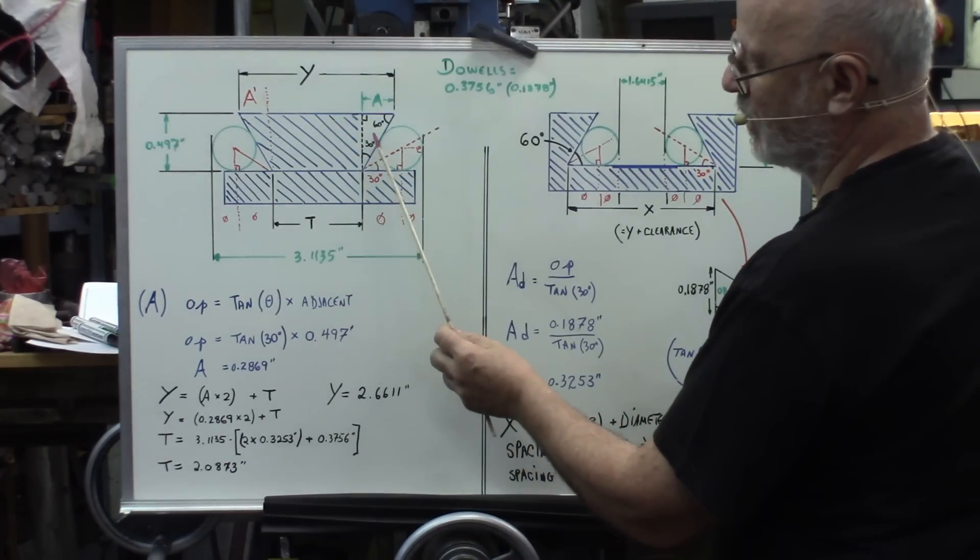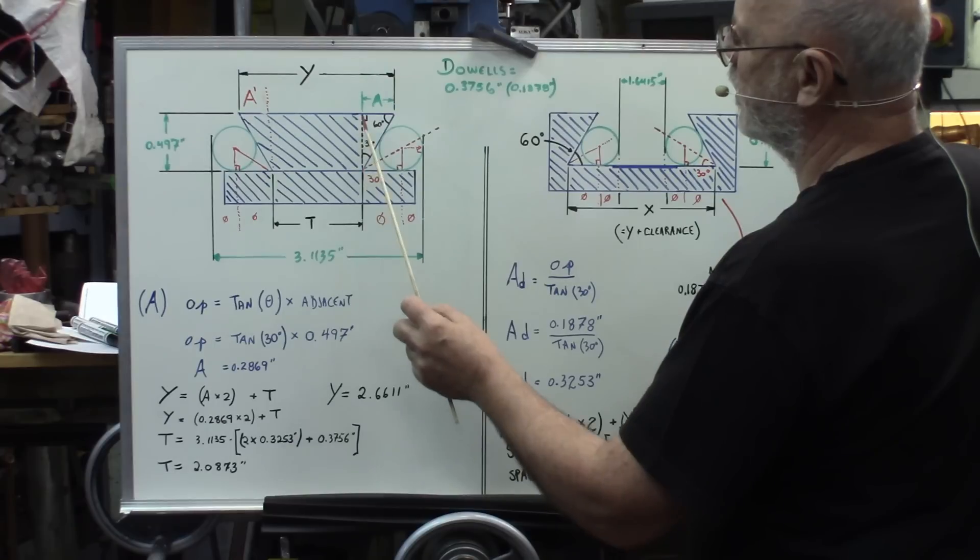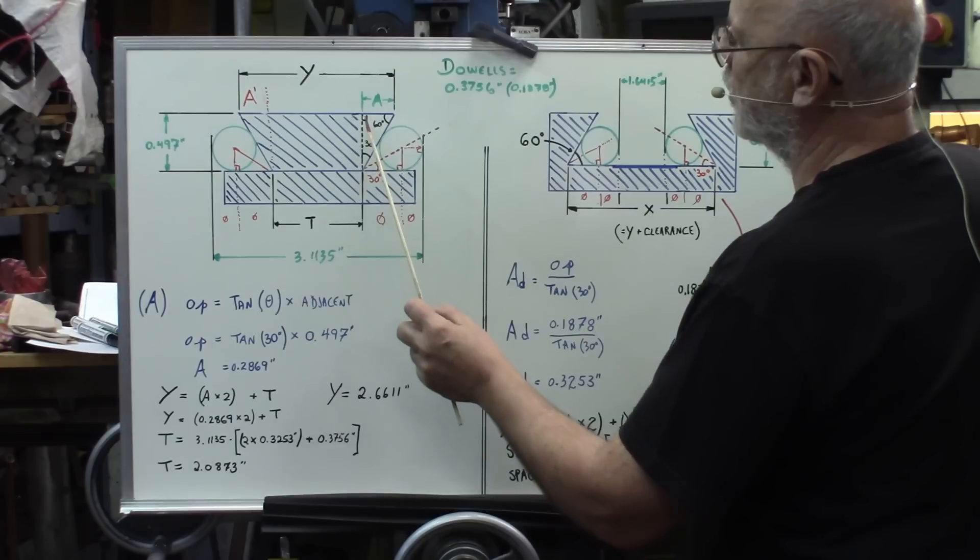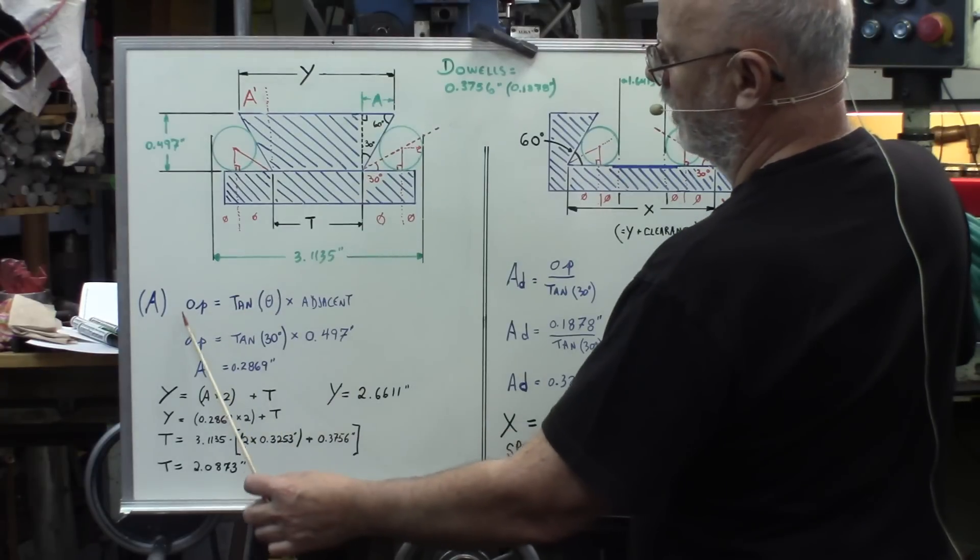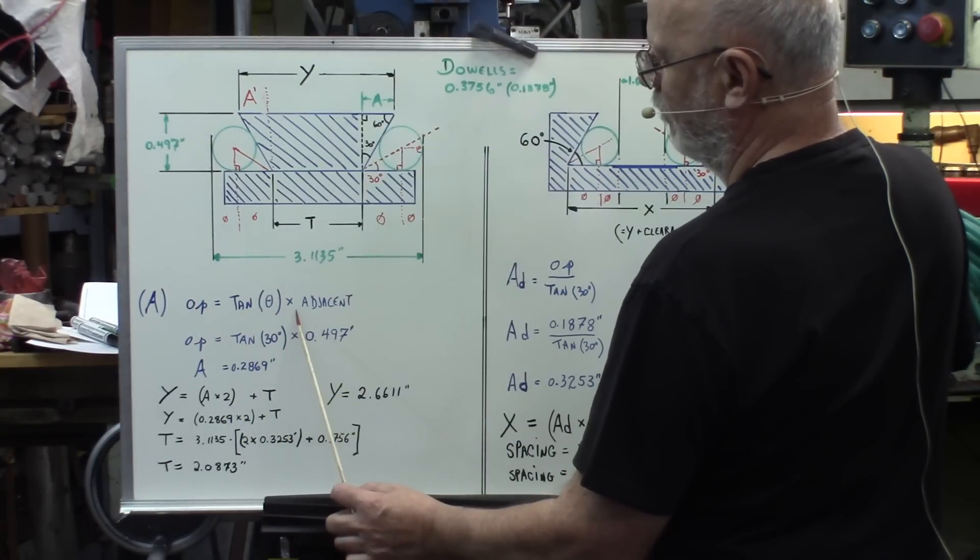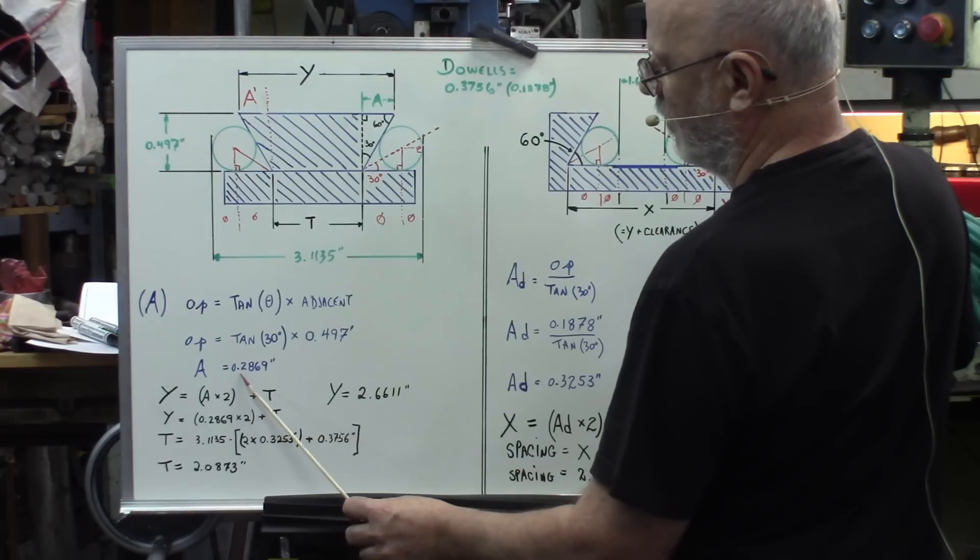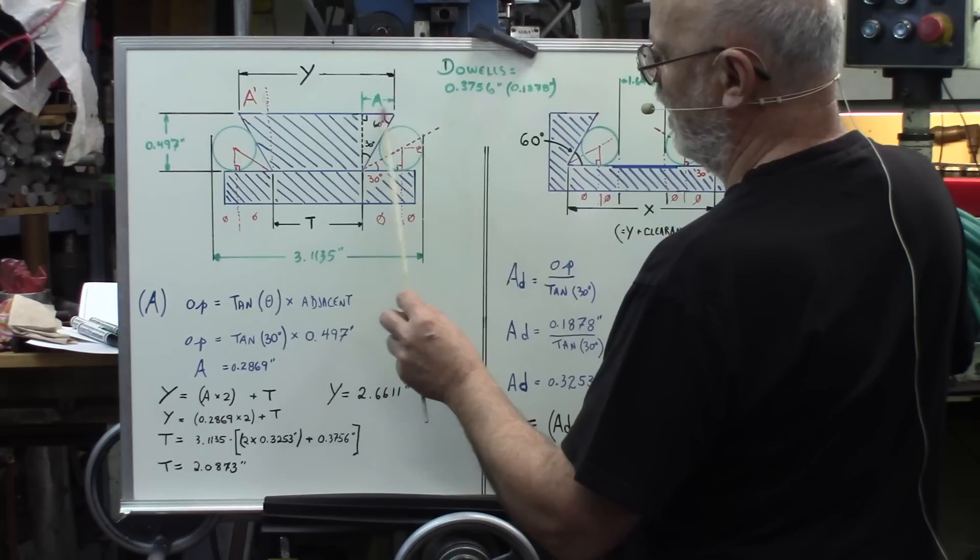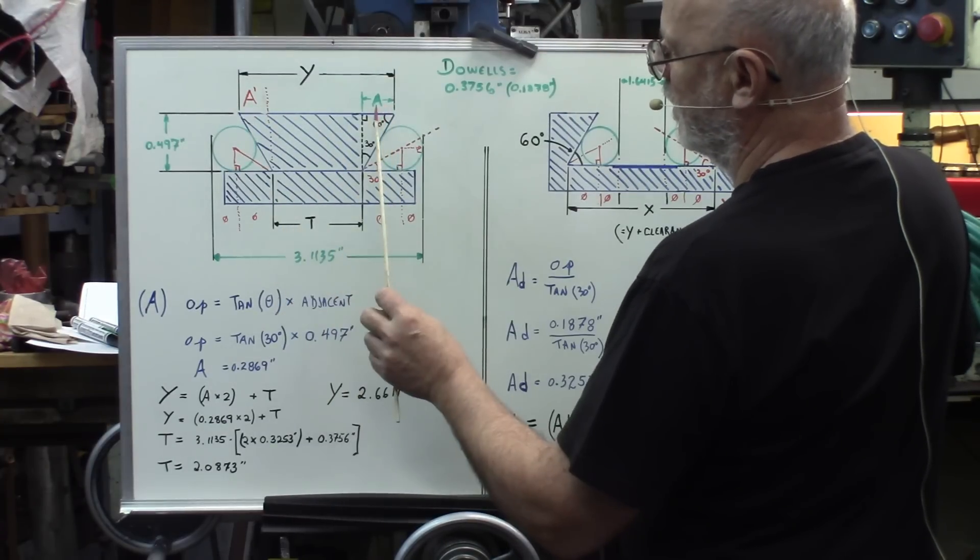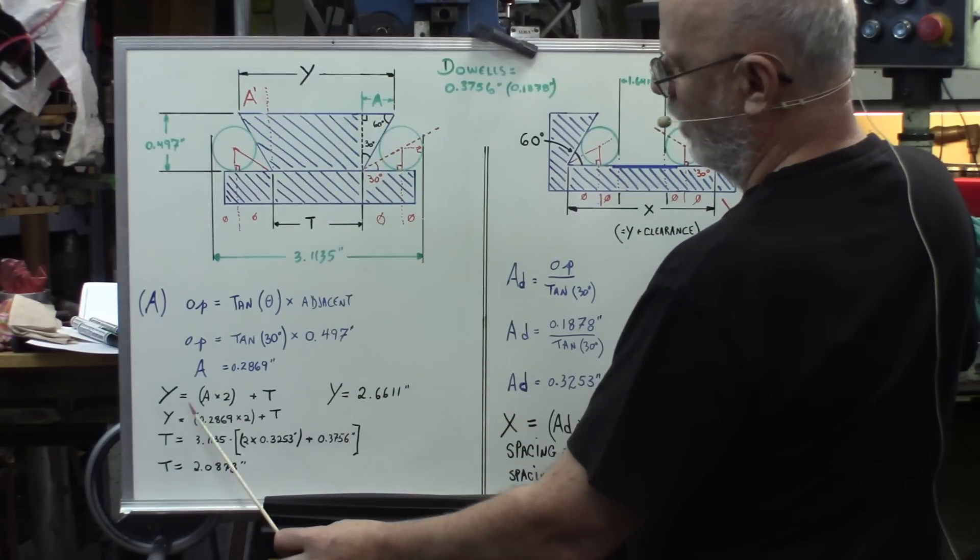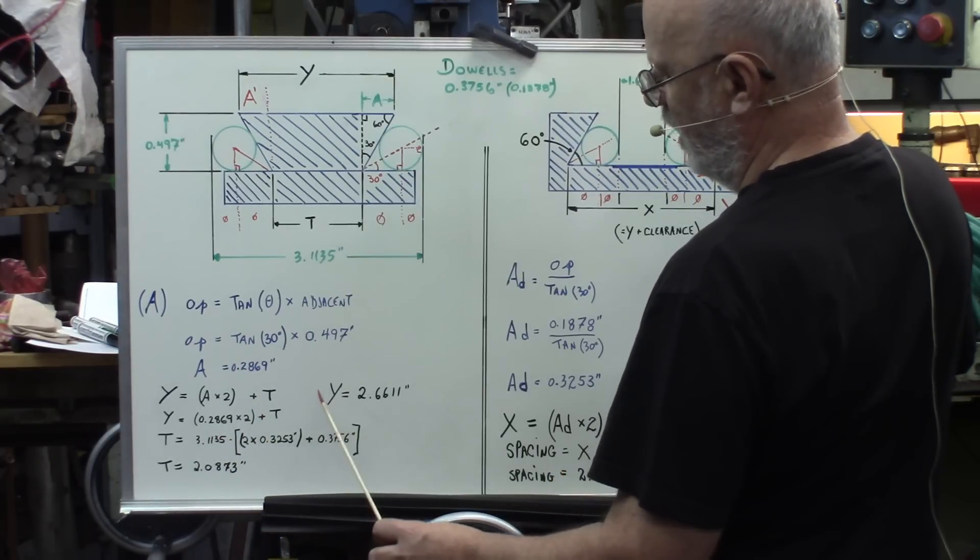To find Y, same principle. We got a triangle there, and we got two known values in it. We got angle, and we got this side there. Let's say we work with the 30 degree angle. We have the adjacent side there, which is 497 thousandths of an inch. It's going to be the final height. So the opposite side is tangent multiplied by the adjacent side. Tangent 30 degrees multiplied by the adjacent side, 497, which is the height there. This will give you 286 thousandths of an inch for the A part there. Y is T plus A and A prime. The two distances here are symmetrical. So Y is 2 times A plus T, which is going to give you 2 times 286 thousandths plus T. Y is going to be the final result there.